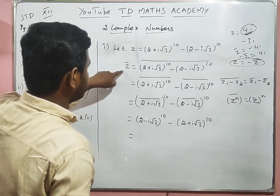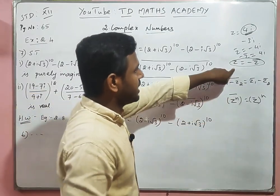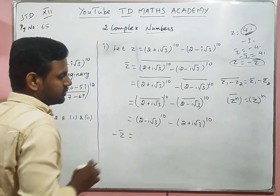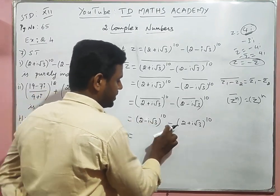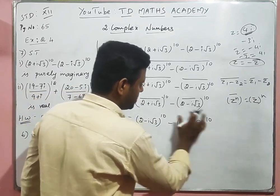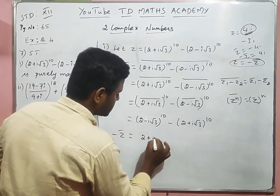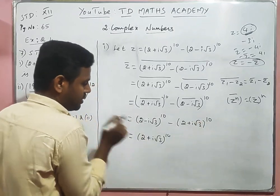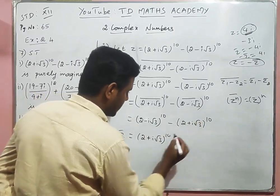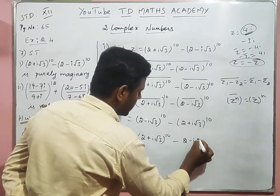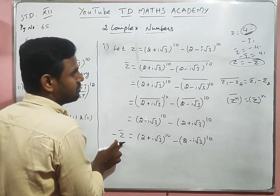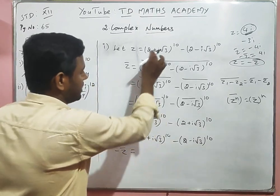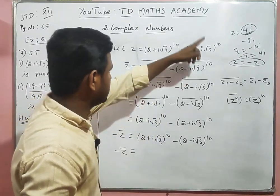Now we need to find −Z̄. We multiply Z̄ by −1: −Z̄ = −[(2 − i√3)^10 − (2 + i√3)^10] = (2 + i√3)^10 − (2 − i√3)^10. This is the positive term (2 + i√3)^10 minus (2 − i√3)^10.